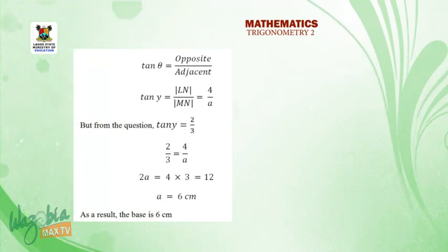So how do we get MN? We can just get MN by using our SOHCAHTOA. The normal way of getting our tan is the ratio of opposite over adjacent. Our opposite there has been given as LN, which is 4, and the adjacent MN is not given. Let it be A. So it means our tan Y should be 4 over A. But from the question, tan Y has been given as 2 over 3. So equate 2 over 3 to 4 over A. If you cross multiply, we have 2A equals to 4 times 3. That's 2A equals 12, and A equals 6.